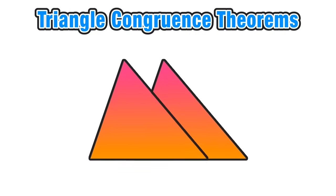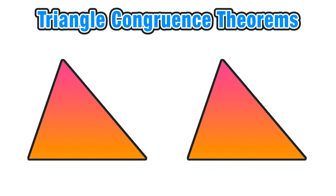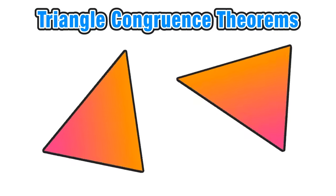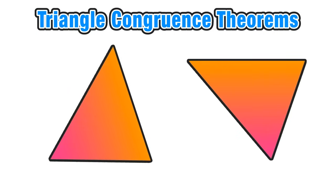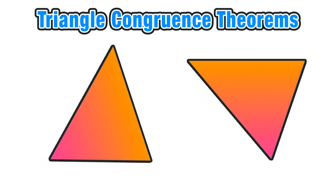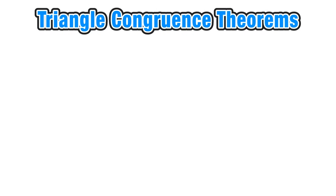If their corresponding sides and angles have the same measure, then we can say the triangles are congruent. This applies even when the figures don't have the same orientation and visually it's not so easy to tell whether or not the triangles are congruent. This is where our theorems are going to come into play. The goal of this lesson is to help you understand why the theorems we use prove congruence and how to know which theorem to use in a particular situation.